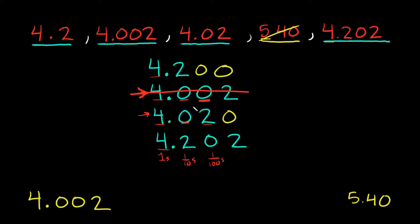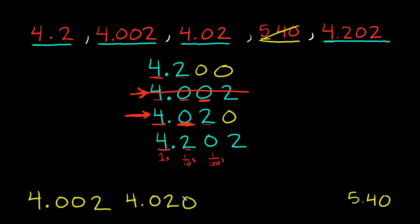Now which one is the next smallest? These remaining numbers all have 4s in the ones place, so we compare the tenths place. We have a 2, a 0, and a 2 — so 4.020 is the next smallest. I'll write that down: 4.020.